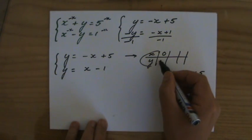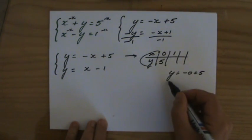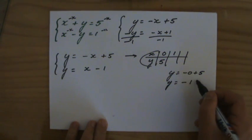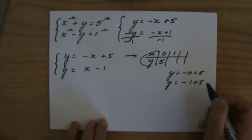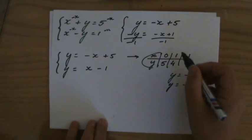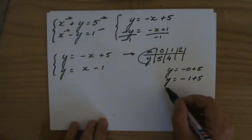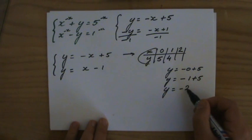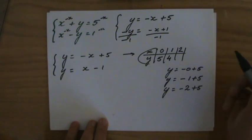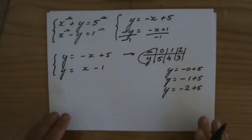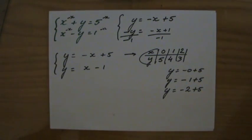Minus 0 plus 5, so y is going to be 5. Let's take 1, so y is going to be minus 1 plus 5, or 5 minus 1, that is 4. Let's take 4x is 2, minus 2 plus 5, and that is 3.